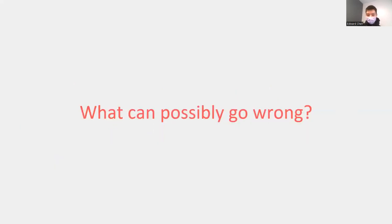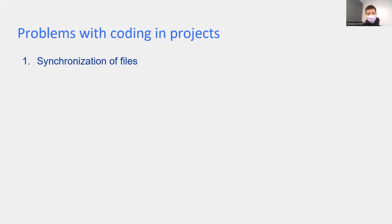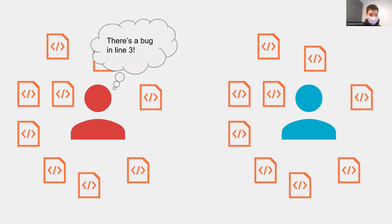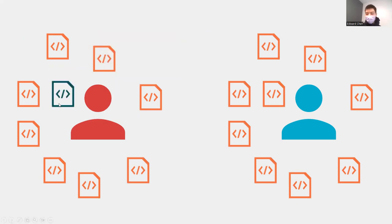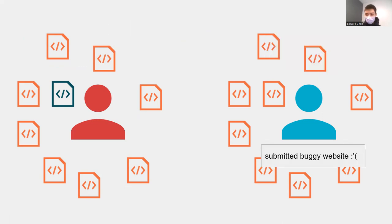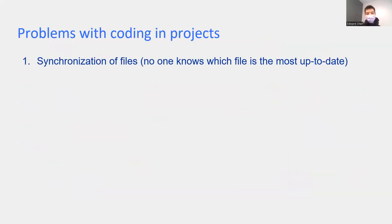What can go wrong? One issue is synchronization of files. Let's say Ben finds a bug in line three of a code file and corrects it. Alice doesn't know about that, and thinking the web lab deadline is coming up, she goes ahead and submits her code. It turns out the team has submitted a buggy website. That's a synchronization issue — nobody knows which file is best to use at any one time, and there's a lot of communication required that isn't automatic.